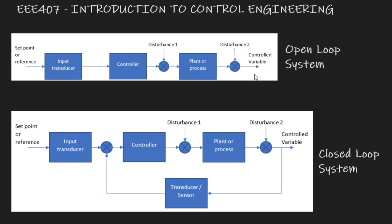Here I've drawn the typical diagram of an open loop system. The upper diagram shows what you have in an open loop system. You have your input, which we could call the set point or the reference — those are names we often use. That's the input to our system. You often have something called an input transducer, because you need to take your input signal and convert it into a form that is usable by the system.